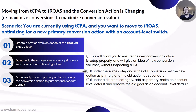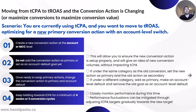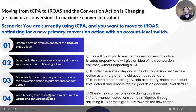If the new conversion action and the old conversion action are under the same category, set the new action as primary and the old action as secondary. If they are under a different category, add the new one as primary, make it an account level default, and remove the old goal as account level default. In step four, still keep bidding toward target CPA for a minimum of four weeks or three conversion cycles, whichever is longer — do not switch to target ROAS yet.